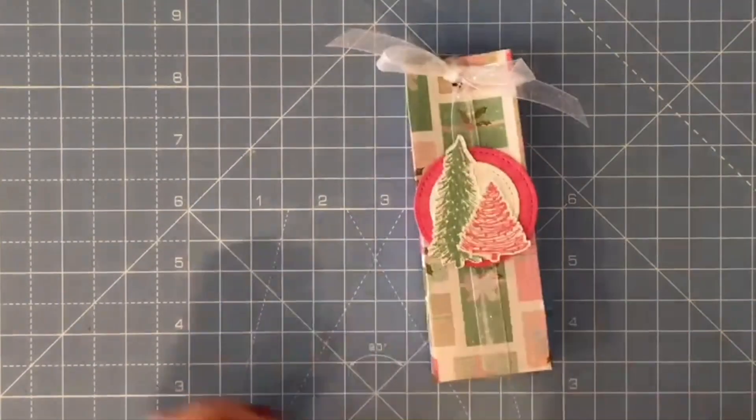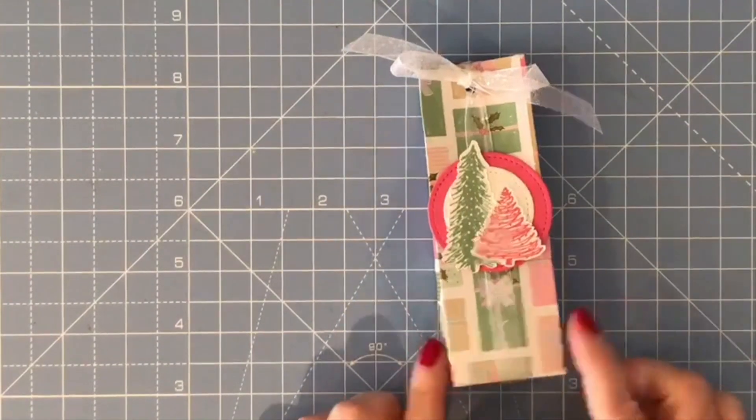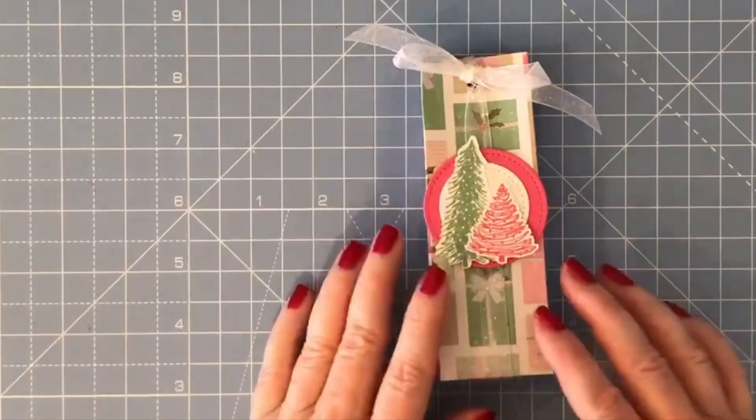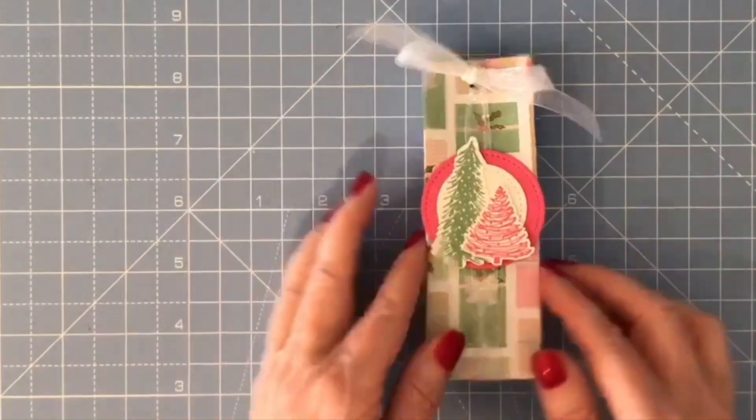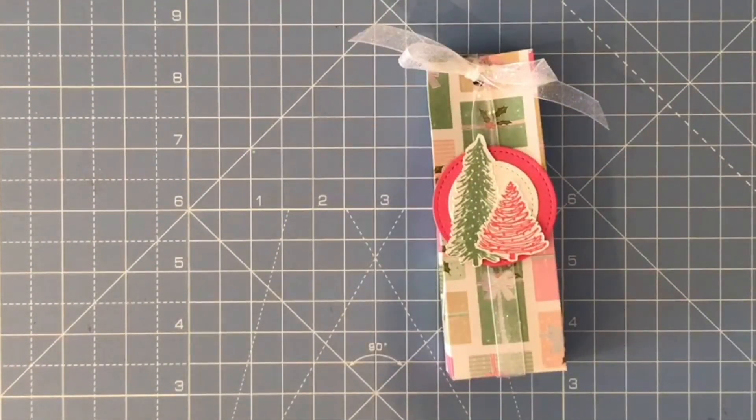So that's today's simple quick project, all made from one sheet of six by six designer series paper. If you use the Whimsy and Wonder paper which is twelve by twelve, you'll get four of these from one sheet of paper. I hope you like that project. Please give it a thumbs up, don't forget to subscribe, and I'll see you in the next video. Thank you.